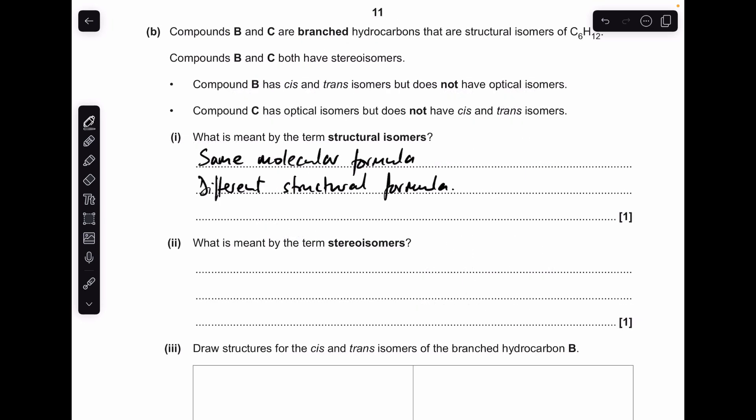Moving on to part B. So a couple of definitions. Structural isomers have the same molecular formula but different structural formula. And stereoisomers have the same structural formula but different spatial arrangements of atoms or groups.